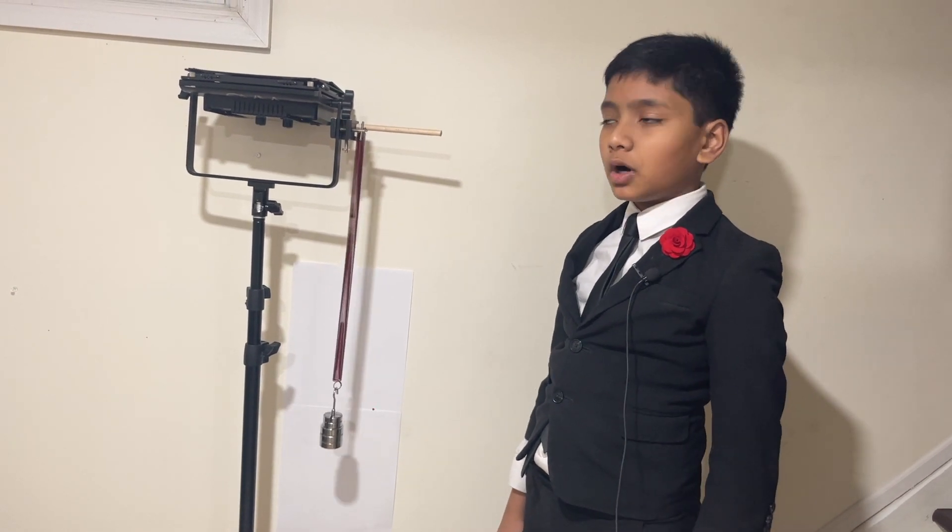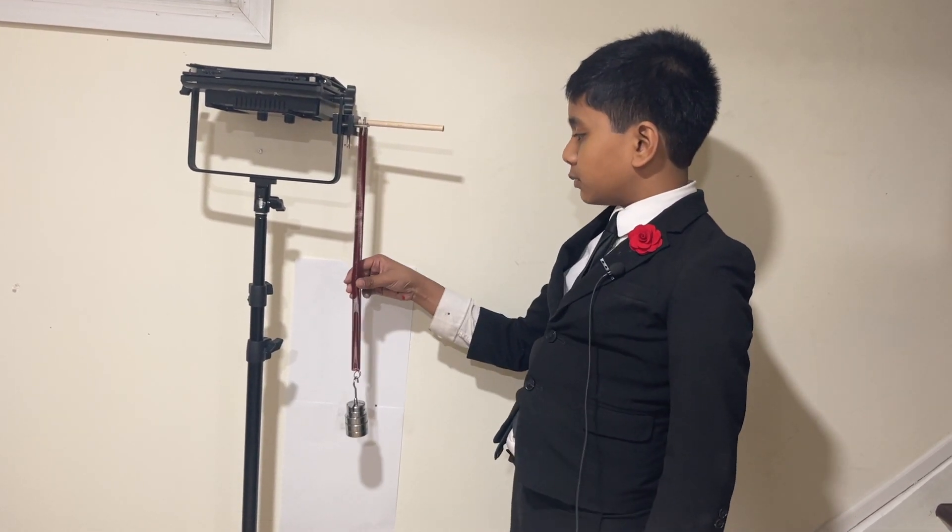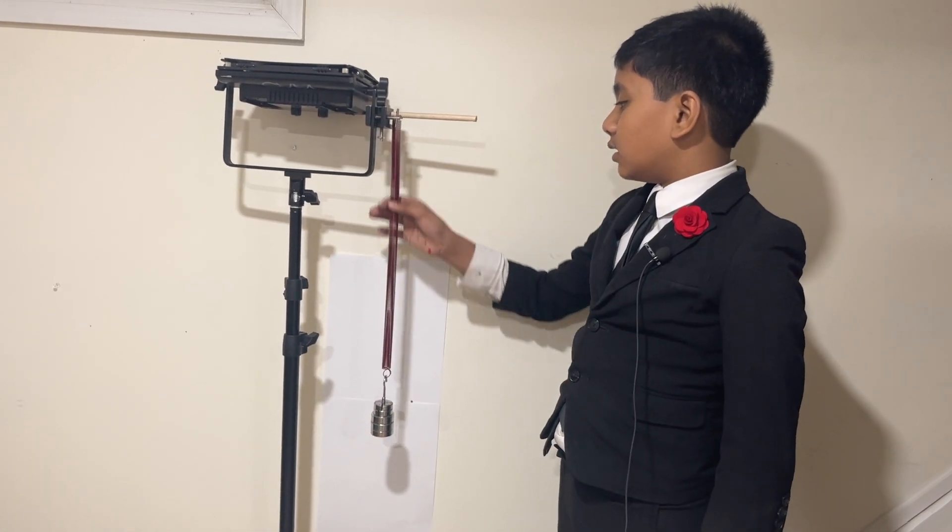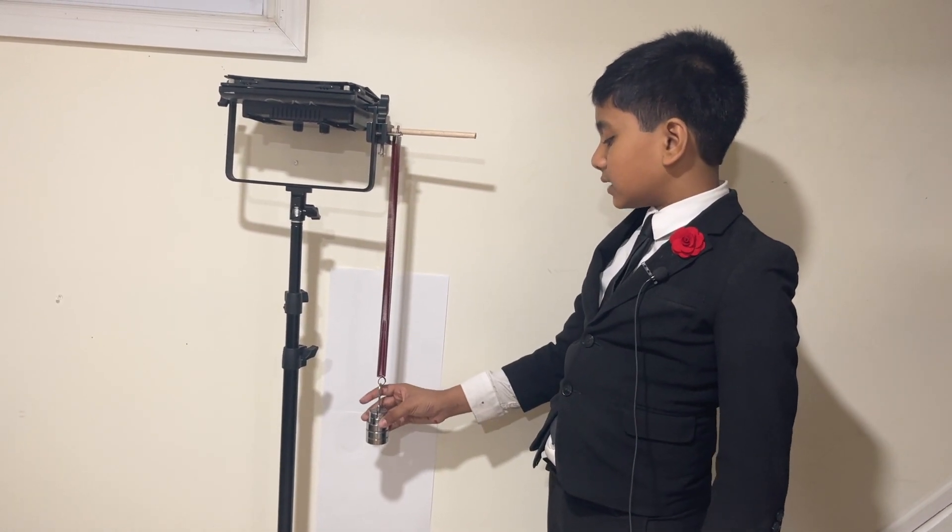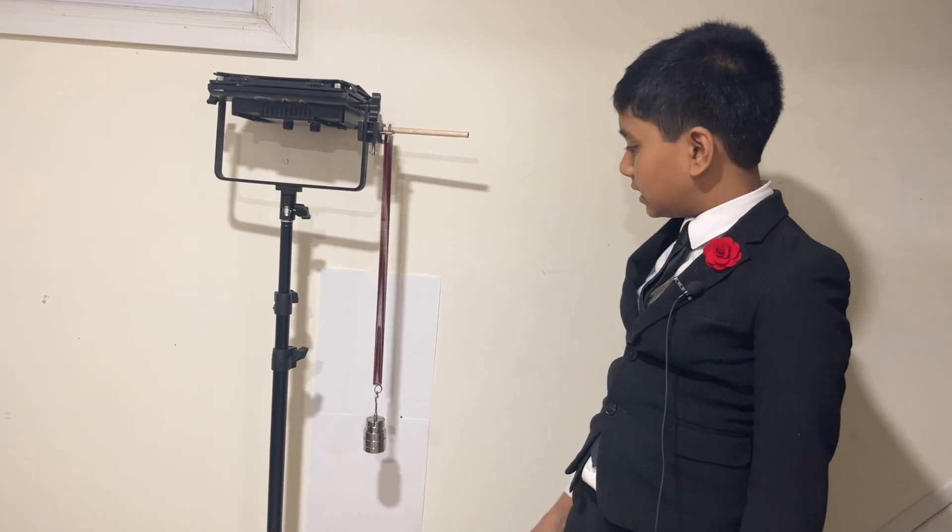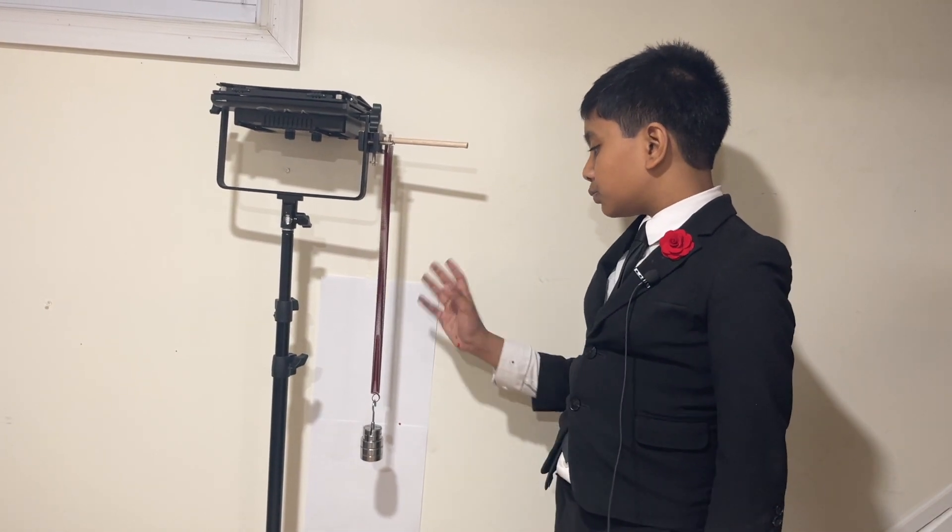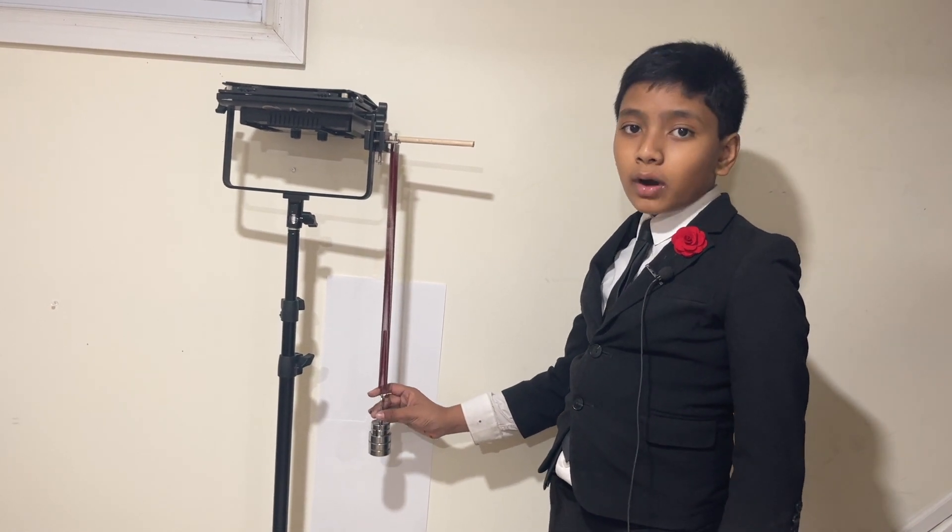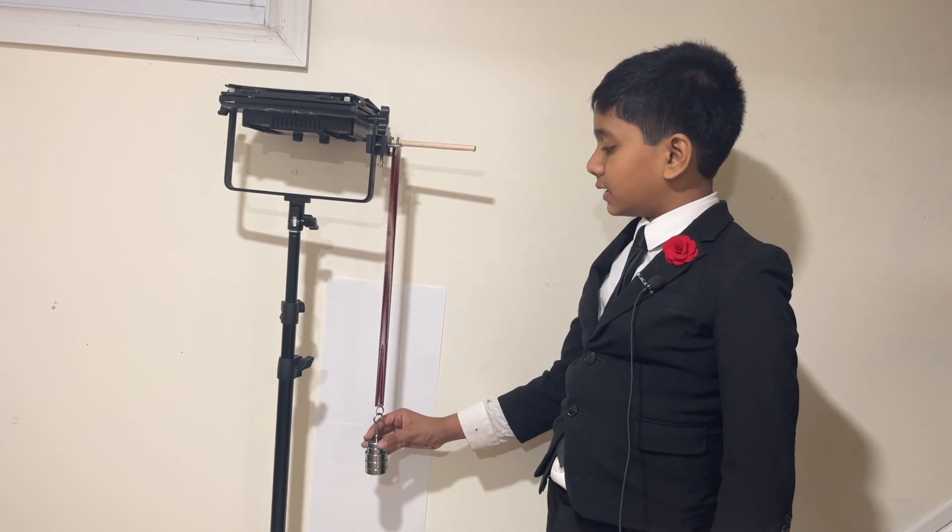Today we're talking about simple harmonic motion in the form of a spring. Here we have a spring being stretched out by this mass, but it's at its equilibrium position. This spring is an example of simple harmonic motion because it does one simple thing: it oscillates.